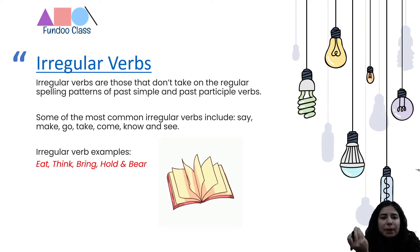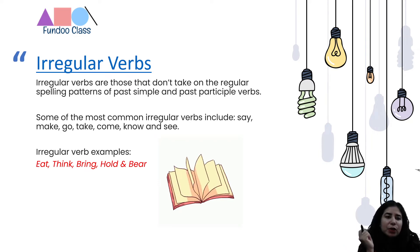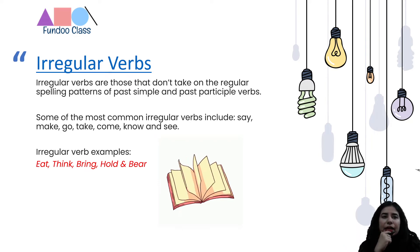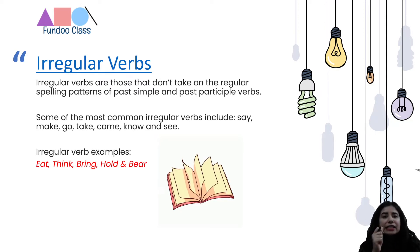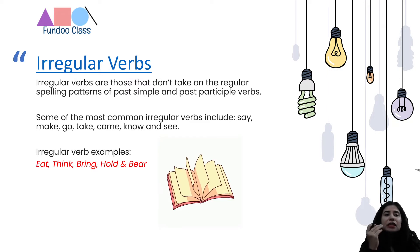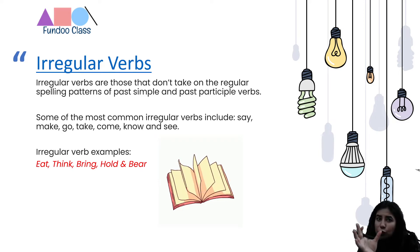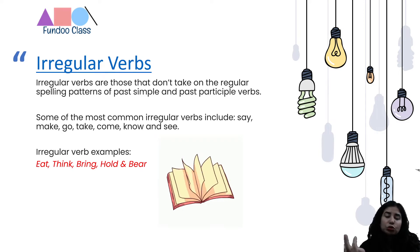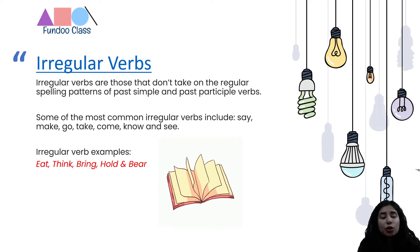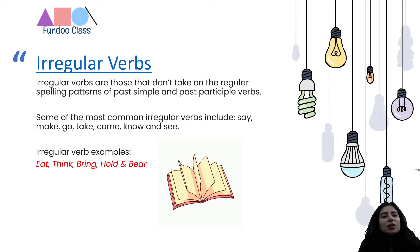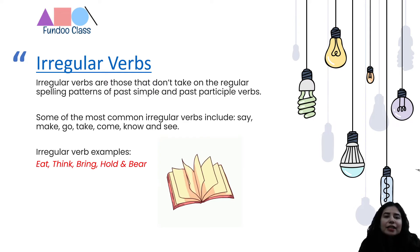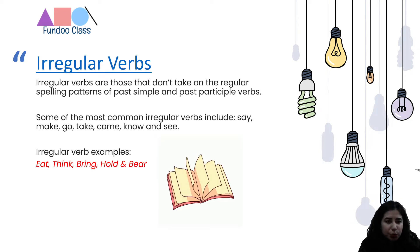When we talk about their simple past or past participle forms — like go, take, come, know, see — for example, eat: the second form is ate, and the third form is eaten. There is no spelling pattern being formed, so that is the reason we call such verbs irregular. It doesn't mean they're not functioning rightly, but there is no set or regular spelling pattern.